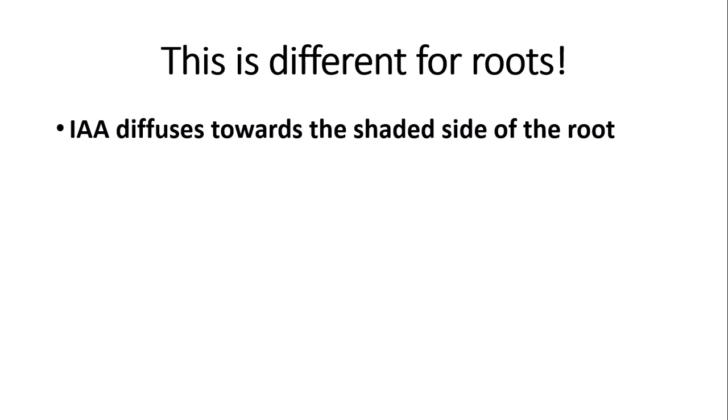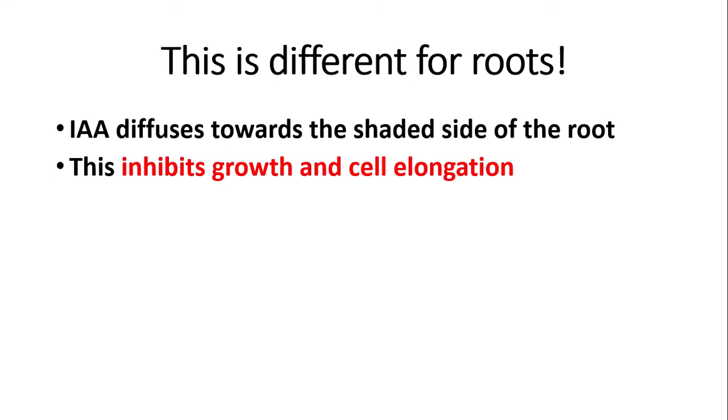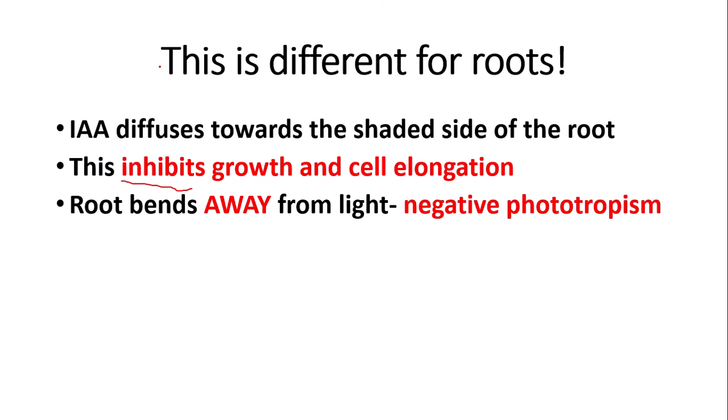However, the phototropism response is different for roots. In roots, IAA follows the same principle at first — it diffuses towards the shaded side. However, in roots IAA inhibits growth and cell elongation rather than promoting it. So the shaded side has a higher concentration of IAA, which inhibits growth, causing the root to bend away from light. When the root bends away from light we call this negative phototropism, as the root is moving away from the stimulus. For shoots, the response is positive phototropism as the shoot bends towards light.